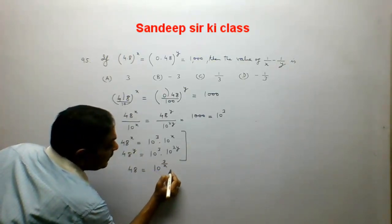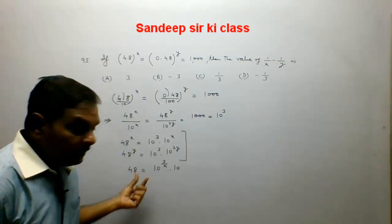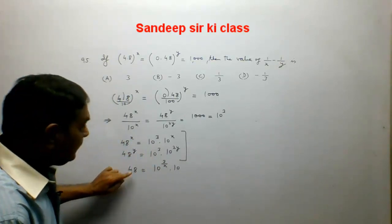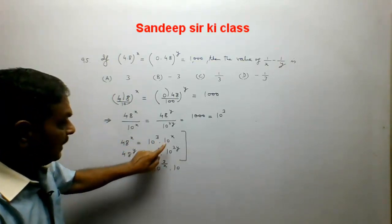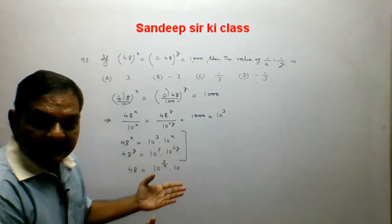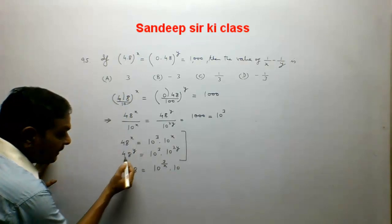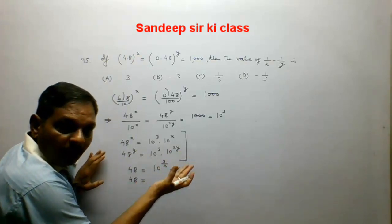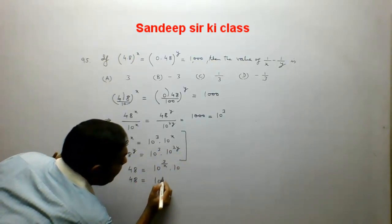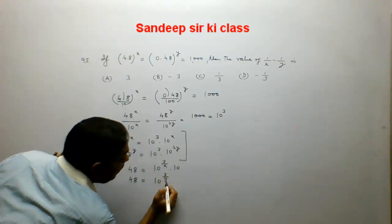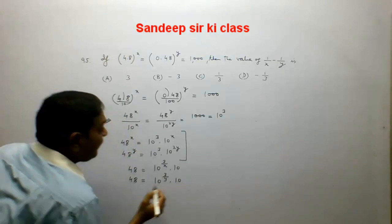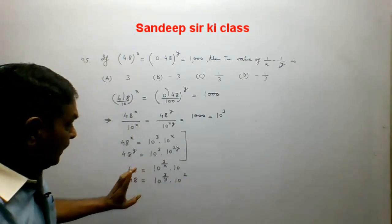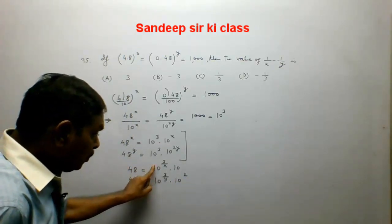From the first equation, raising both sides to the power 1 upon x, the left-hand side becomes 48 and the right-hand side becomes 10 to the power 3 upon x multiplied by 10. Similarly, from the second equation, raising both sides to the power 1 upon y gives 48 equals 10 to the power 3 upon y into 10 to the power 2.